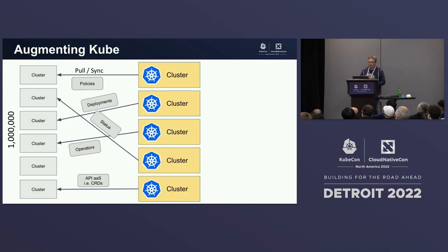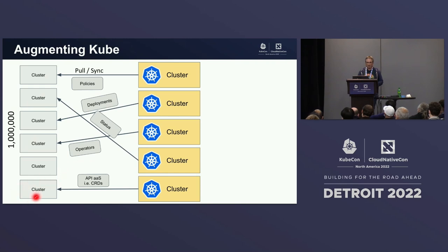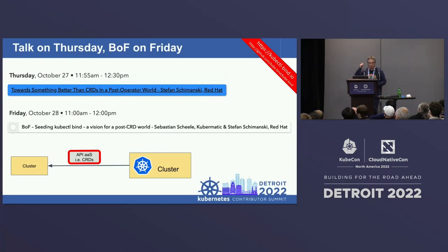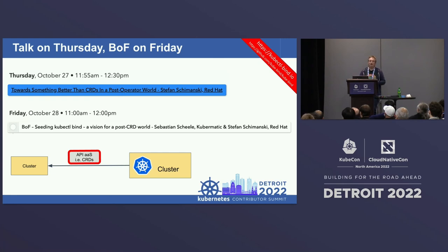Think about use cases in the IoT or edge space where you have a million objects that need a consistent control plane. You could use that to connect your fridges to KCP. And here Kubernetes comes back into the picture: if you have many clusters, you might think about syncing policies, actual workloads, or a source of truth for which operators should be installed. You might share APIs between KCP on the left and clusters on the right, getting something like API-as-a-service based on CRDs. There's another talk tomorrow and a birds-of-feather on Friday about that idea.